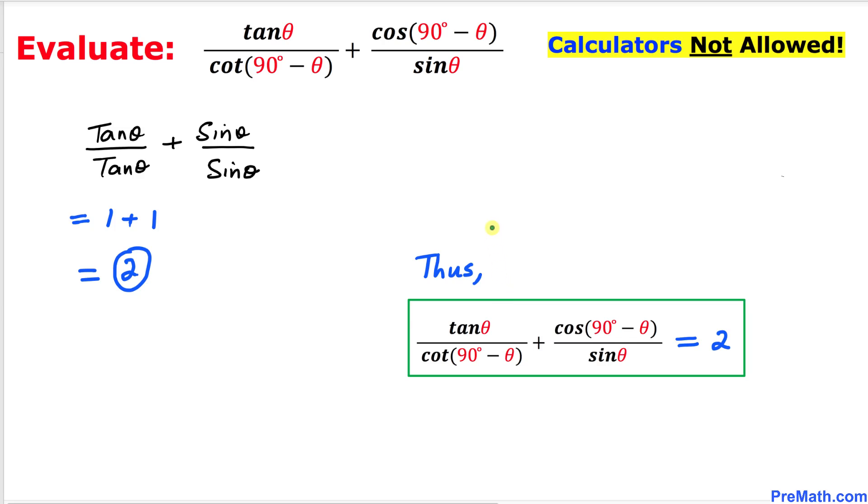Thus, the value of our given rational expressions turns out to be two, and that's our final answer. Thanks for watching and please don't forget to subscribe to my channel for more exciting videos.